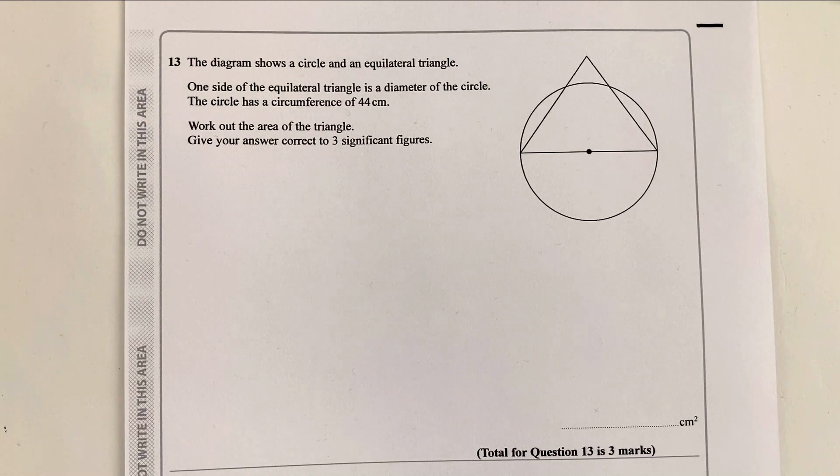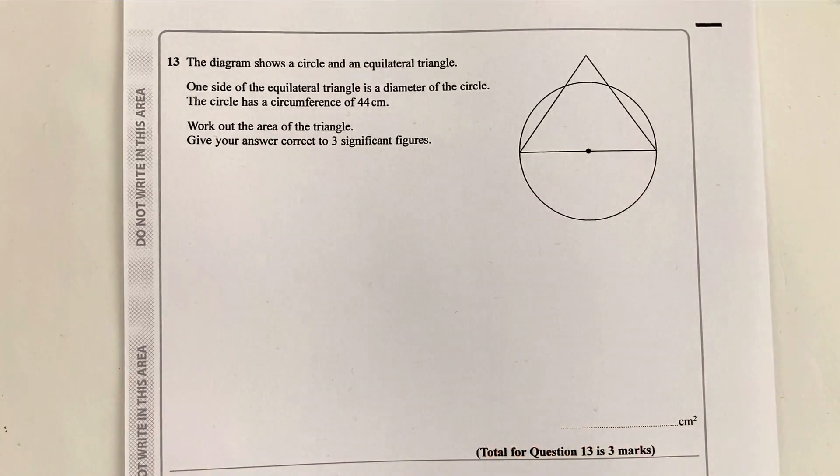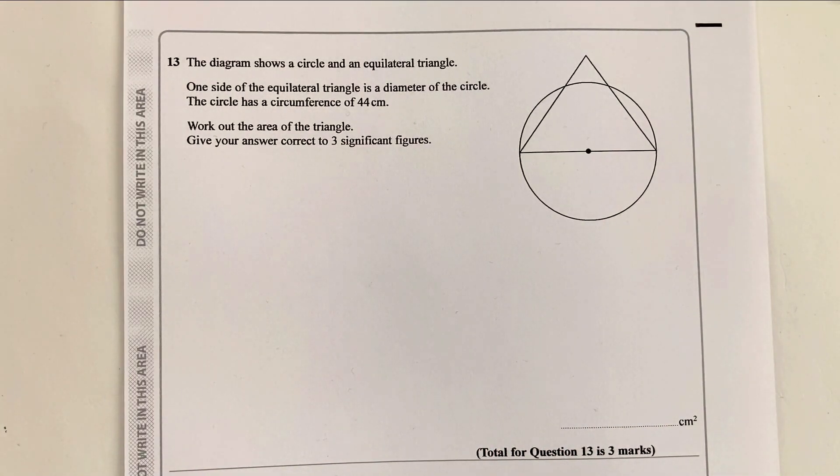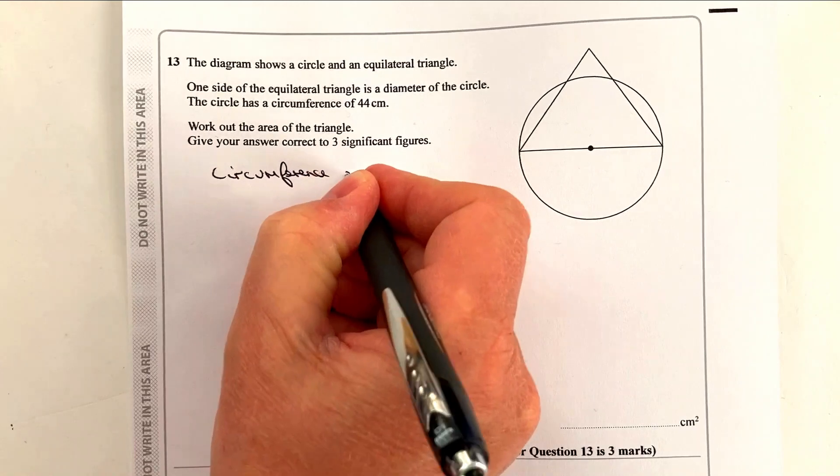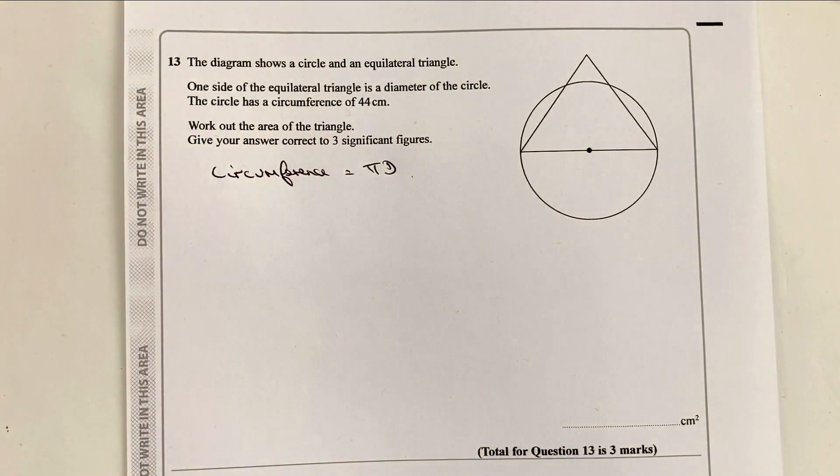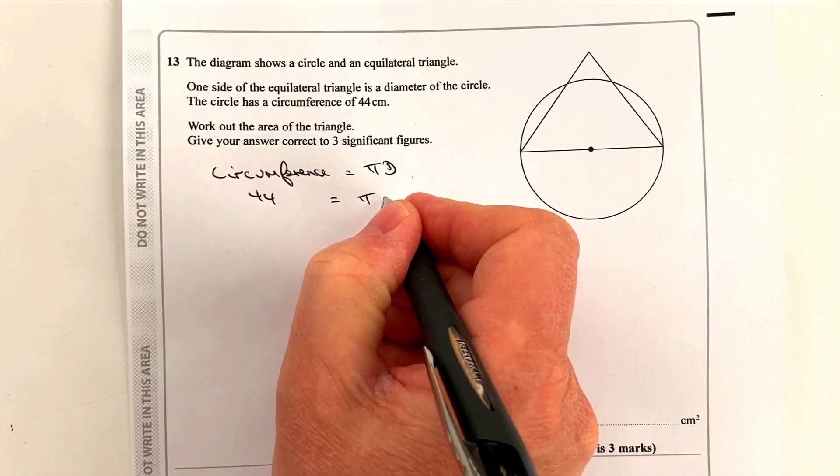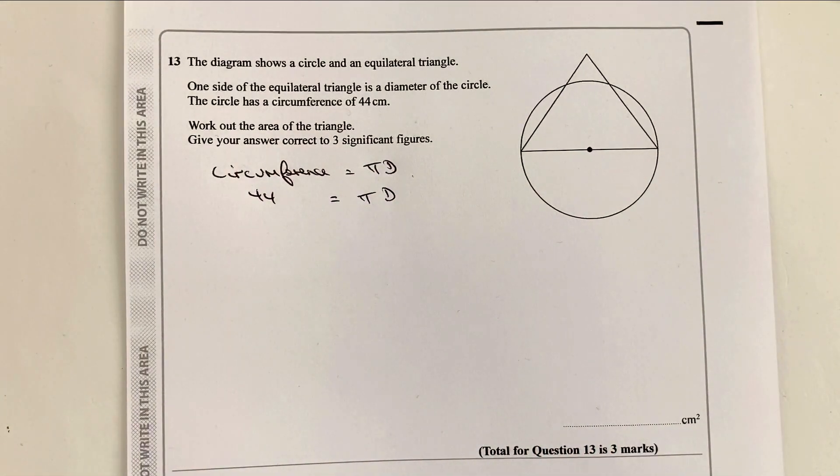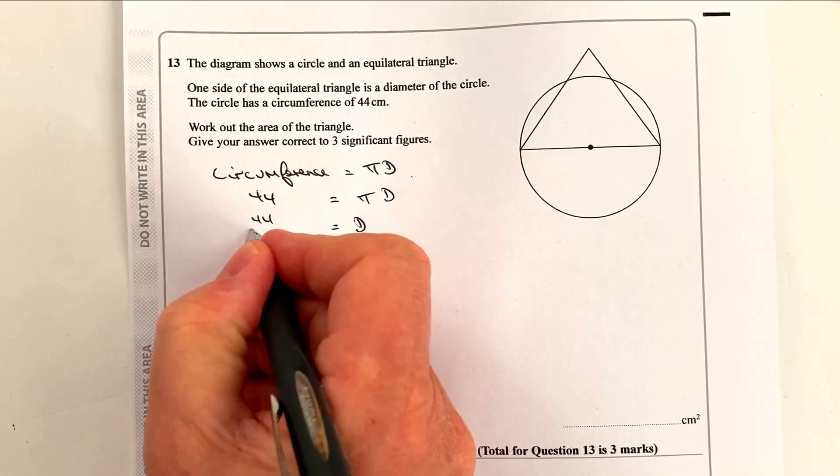It says importantly there's an equilateral triangle, so it means basically all the sides of the triangle are the same. So if we want to find out the length of the side, we're told that the circle has a circumference of 44 centimeters. To work circumference out, we can say circumference equals pi d. Some people use 2 pi r, but I think in this circumstance it's probably better to use pi d.